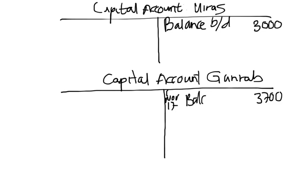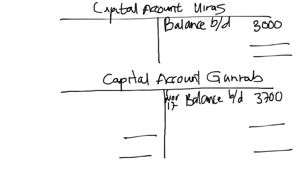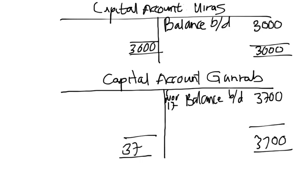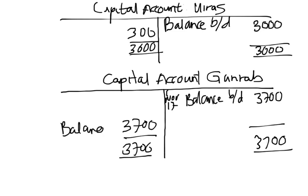We close off the capital accounts by drawing up the totals in the columns. No additional capital was invested during the year, so the totals are $3,000 for Uiras and $3,700 for Gurirap. The closing balance — your balance carried down — remains $3,000 for Uiras and $3,700 for Gurirap.